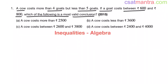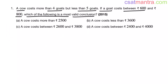This question was asked in 2015. It is based on the inequalities concept from the algebra chapter. Let's assume the cost of cow as C and cost of goat as G. It is given that cost of cow is more than 4 goats but less than 5 goats.